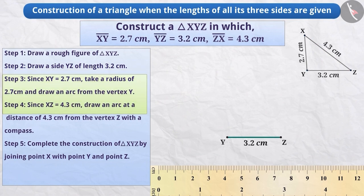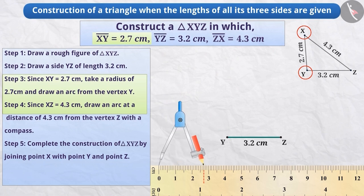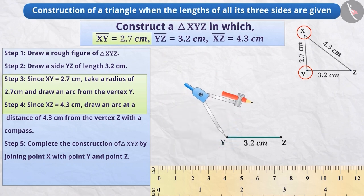Step 3. We know that the length of the side XY is 2.7 cm. This means that the vertex X is at a distance of 2.7 cm from the vertex Y. For this, we will open the compass and measure 2.7 cm on the ruler. By placing the pointed end of the compass on the vertex Y and taking vertex Y as the center, we will draw an arc of radius 2.7 cm.